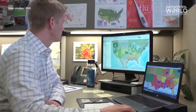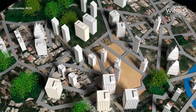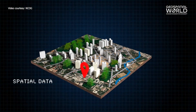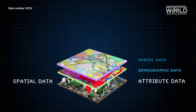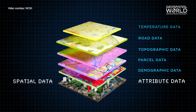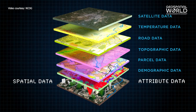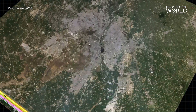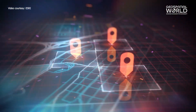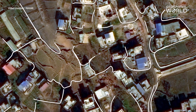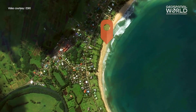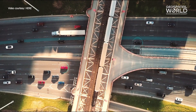Let us understand what is a base map. A base map provides context for additional layers overlaid on top of the reference map. It usually provides location references for features like boundaries, rivers, lakes, roads, and highways.